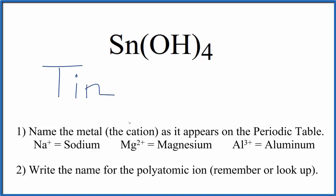Next we're going to write the name of the polyatomic ion. That's this OH here. So when you have OH bonded to a metal like tin, it's called the hydroxide ion.